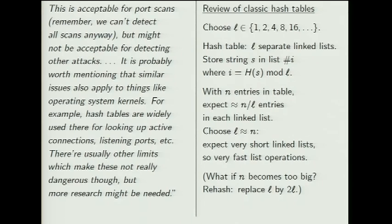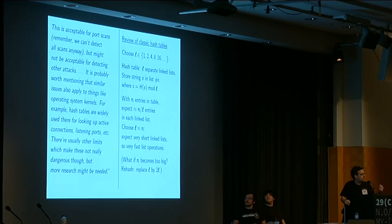If you've got N entries in your table and there are L positions, your average linked list is going to have N over L entries. If you choose L sized appropriately — say L and N are about the same size — then you're going to have about one or maybe two or three entries in each linked list.